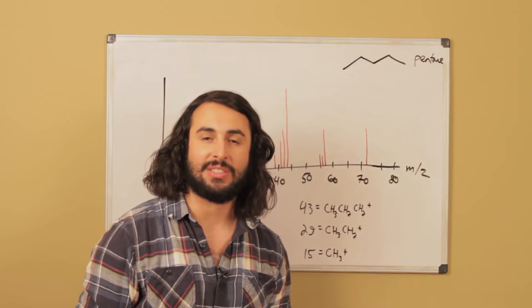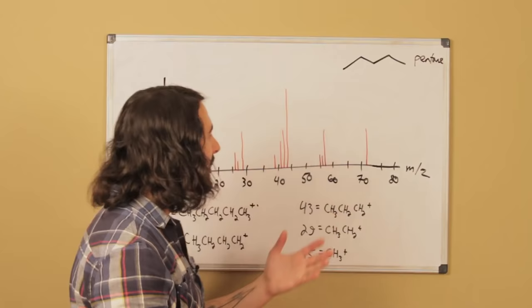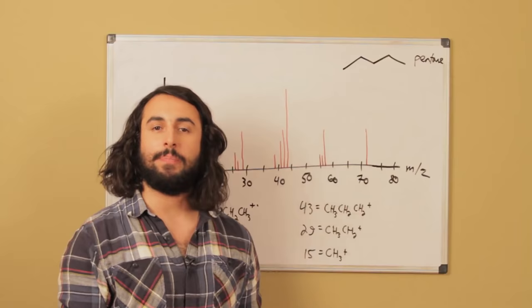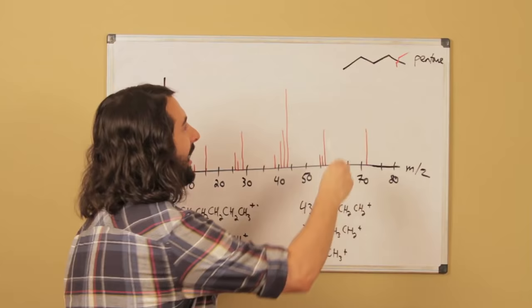What I've drawn here is a sample spectrum, this is pentane. If we're going to ionize that and smash it up into bits, what kind of bits are we going to get? Well, let's say we smash off one of those carbons, we're going to get this four carbon chunk.